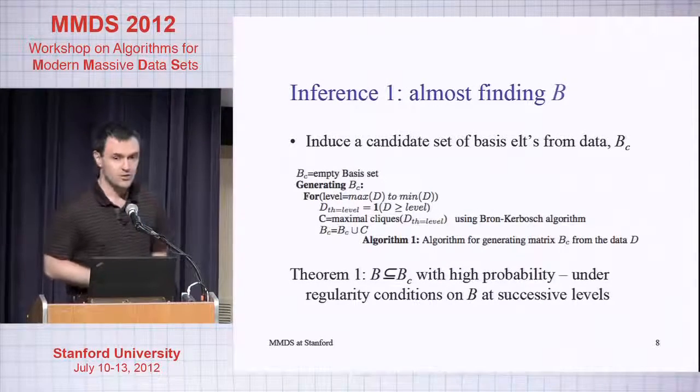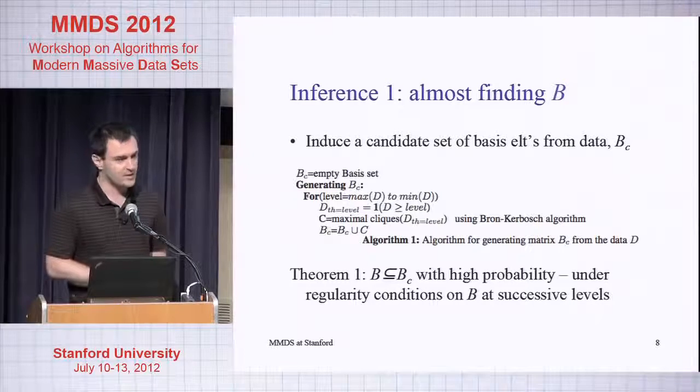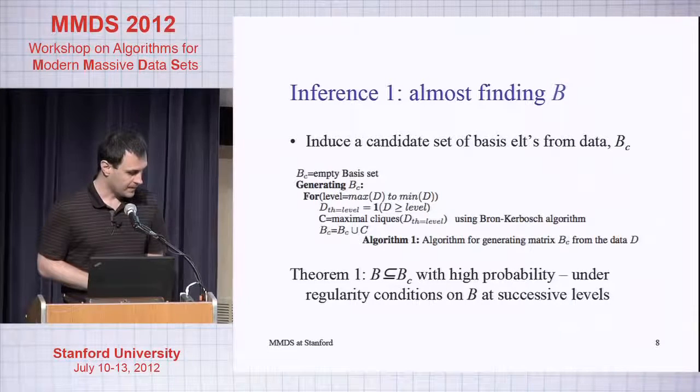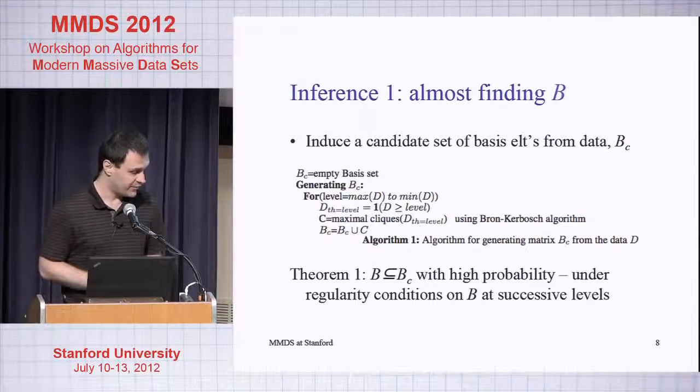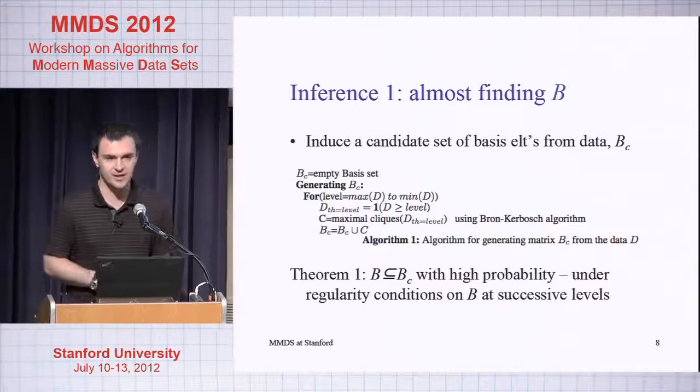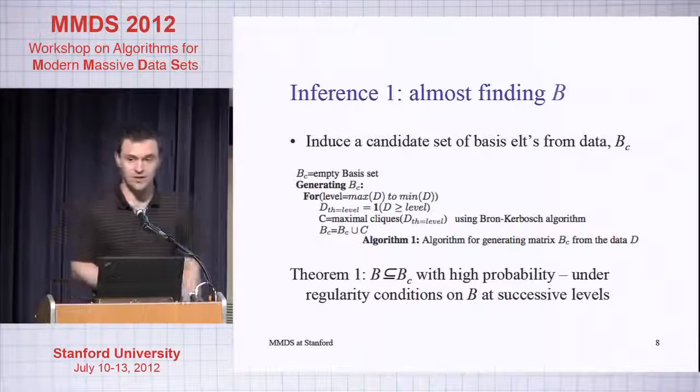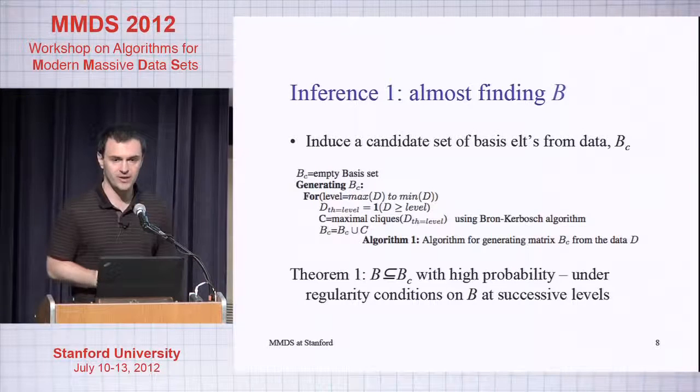We leverage this duality between binary factors and cliques in order to make inference. I think this is a nice trick. It can work if your graph is sparse.